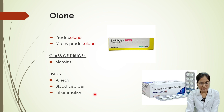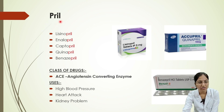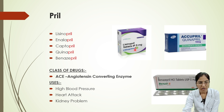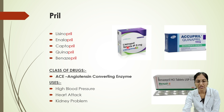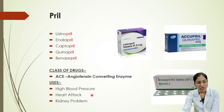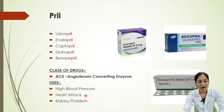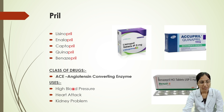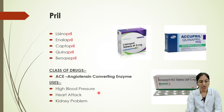Next, we'll look at drugs whose names end with '-pril'. Examples include lisinopril, enalapril, captopril, perindopril, and benazepril. These belong to the class of ACE inhibitors — Angiotensin Converting Enzyme inhibitors — and they are used for high blood pressure, heart attack, and kidney problems.